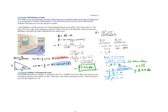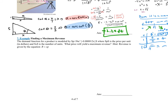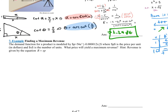And if they ask what the angle is, we can plug that X value in to determine the exact angle. Let's do one last question. The demand function for your product is p equals 56e to the negative 0.00012x, where p is the price per unit in dollars and x is the number of units. What price will yield the maximum revenue? The hint says revenue is given by R equals x times p. So the revenue would be x times 56e to the negative 0.00012x.